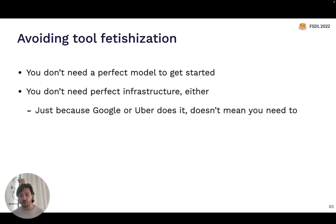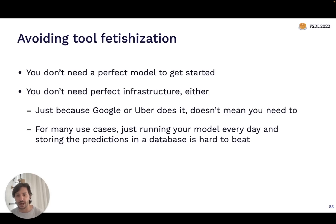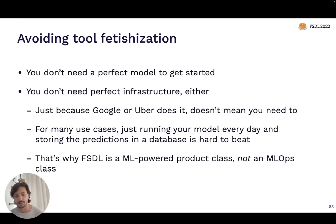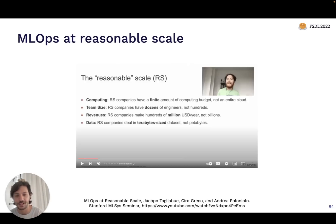Just because Google or Uber has a feature store or serves models in a particular way doesn't mean that you need to have that as well. A lot of what we'll try to do in this class is talk about the middle ground between doing things in the right way from a production perspective, but not introducing too much complexity early on. That's one of the reasons FSDL is a class about building ML-powered products in a practical way and not an MLOps class focused on the best possible infrastructure. A talk and blog post I really like on this concept is 'MLOps at Reasonable Scale' from some folks from Coveo — the central thesis being: you're not Google. You probably have a finite compute budget, not an entire cloud.